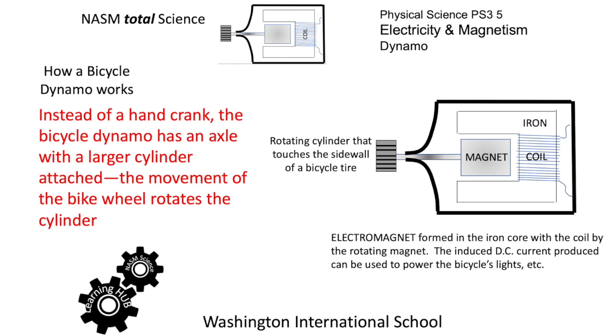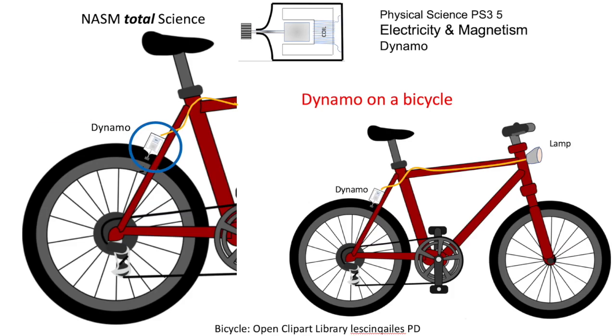Here it is in place on the bicycle, within the blue circle on the left-hand diagram. You can see the rotating cylinder against the wheel and a wire then going through to the lamp at the front and indeed a rear lamp if you want.